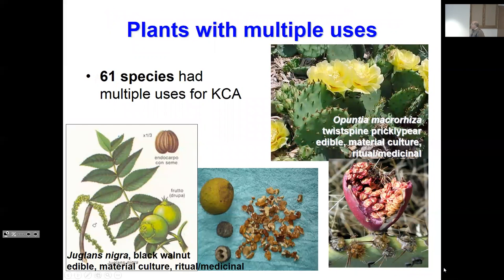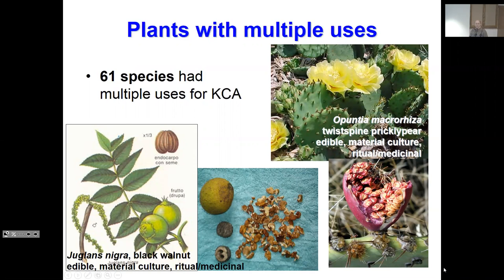Many of these plants had multiple uses. Two of the most common ones would be the cacti — Opuntia — which are abundant in this region. Edible, material culture, ritual, medicinal. As well as black walnut — many black walnuts here. There's another species of walnut too: the small-fruited walnut, Juglans microcarpa. Edible, material culture, ritual, medicinal — multiple uses for these plants.